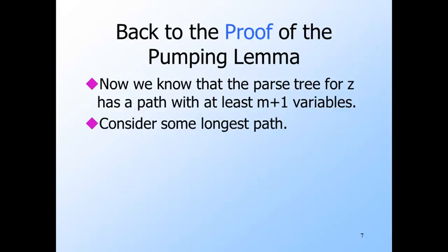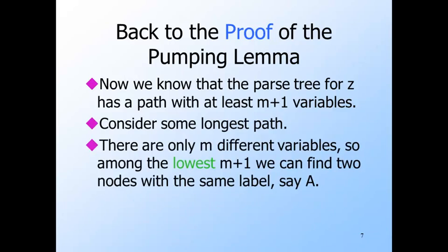Let's focus on one of the longest paths in the parse tree for Z. Surely there are at least m plus 1 variables along this longest path. Remember that m is the number of variables of the grammar, so along this path there are two nodes labeled by the same variable. Call it A.